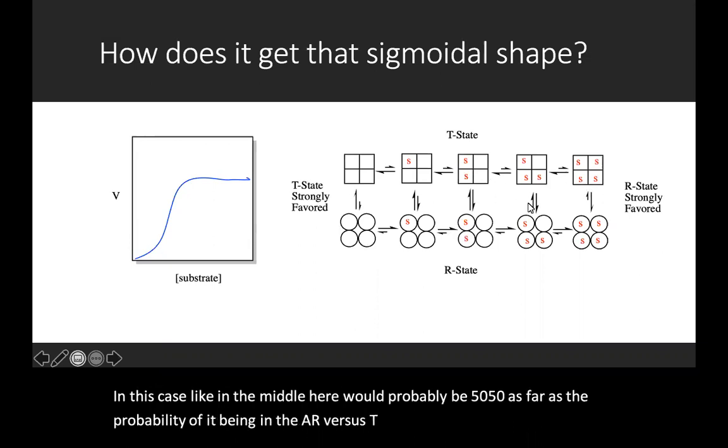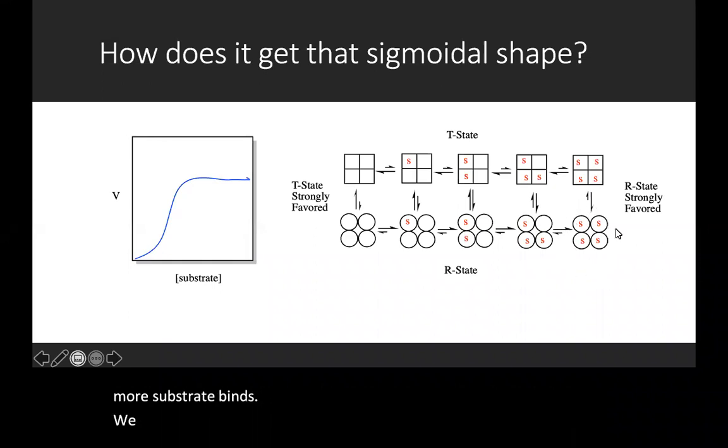And we go further along as more and more substrate binds, we see that we probably have 99% R when we're over on here and about 1% T.